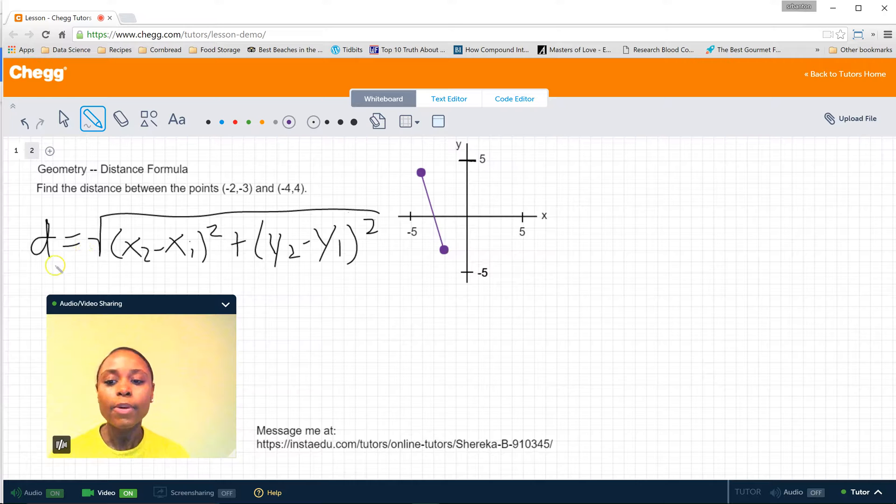So the formula for calculating the distance is here. And it's d, the distance, is equal to the square root of the difference between the x coordinate squared plus the difference between the y coordinate squared.